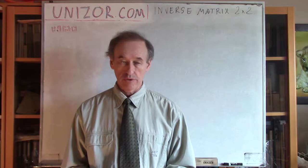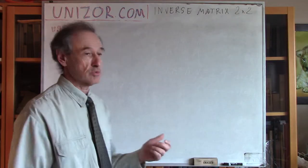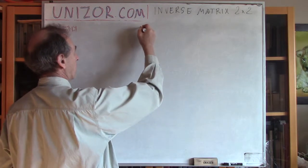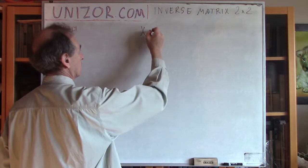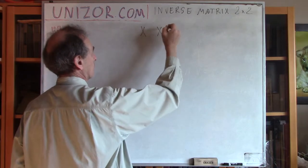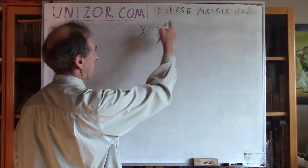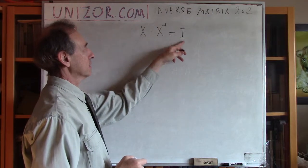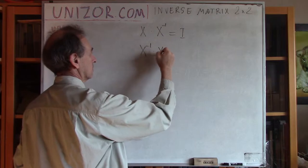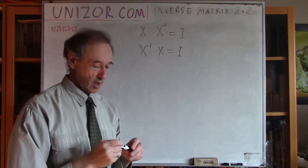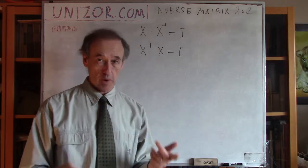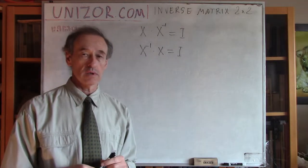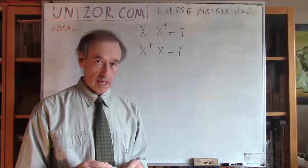Continue talking about inverse matrices. Let me just remind you the definition which we actually came up with in the last lecture was that if you have a matrix X, then the inverse matrix is the one which we symbolically use X to the power of minus 1. If it's multiplied by our X on the right, it will give an identity matrix, or on the left will be exactly the same result.